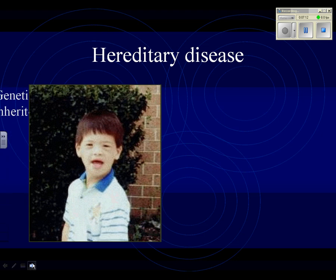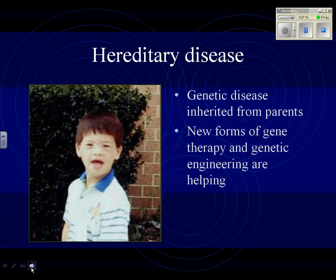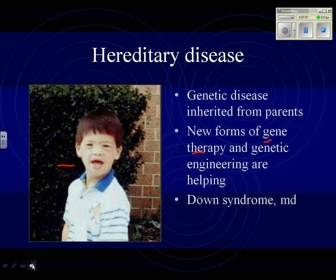Hereditary diseases — moving quickly through this since it doesn't apply much to our class — are genetic diseases inherited from your parents. This little boy has Down syndrome. We're trying to work on things like gene therapy, where you inject a gene into the person to change their genes, and genetic engineering is a big field working on hereditary diseases. Down syndrome and muscular dystrophy are examples of hereditary disease.